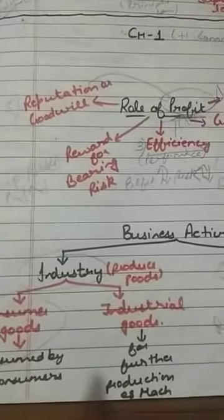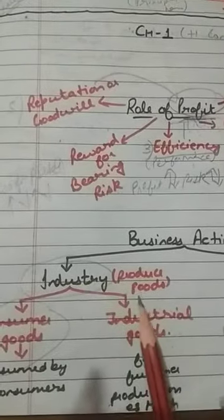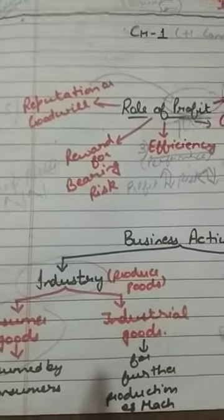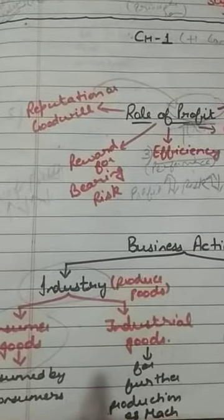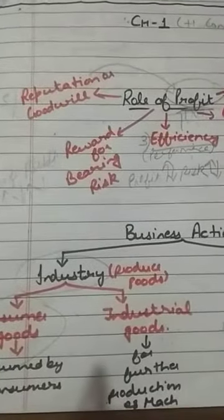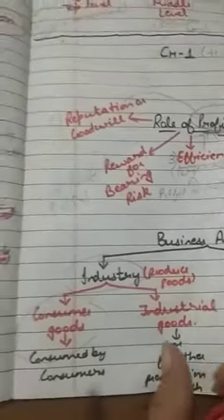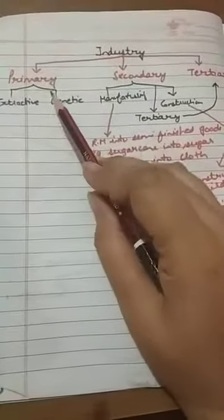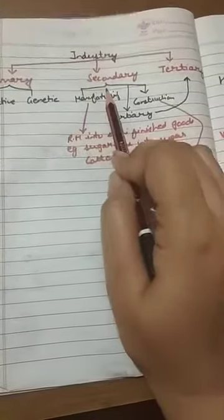The general definition of industry is now clear. We have three types of industries: primary industry, secondary industry, and tertiary industry. These are basically the three types of industry.